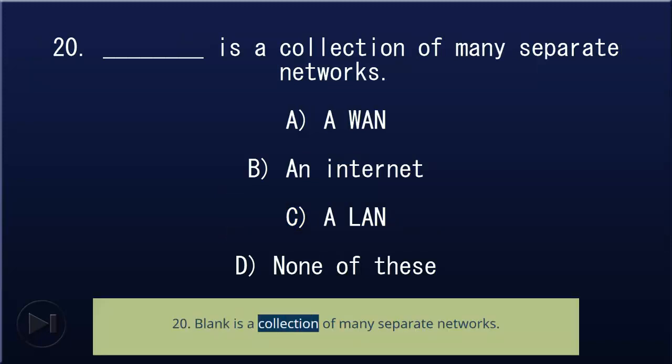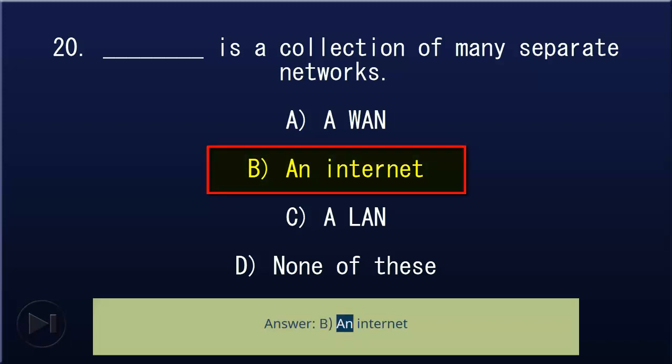20. Blank is a collection of many separate networks: A) a WAN, B) an internet, C) a LAN, D) none of these. Answer: B, an internet.